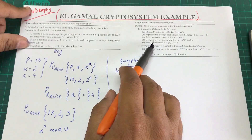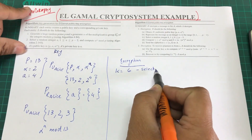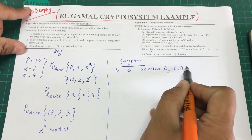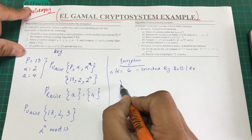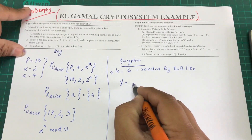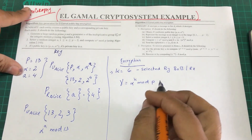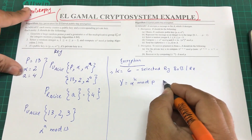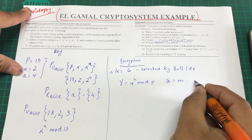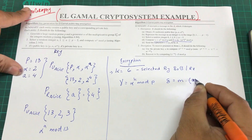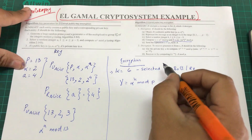After selecting k = 6, Bob computes two values. The first is γ (gamma) = α^k mod p. The second is δ (delta) = message × α^(a·k) mod p. These two computed values are used to encrypt the message. Let's say the message m = 5.